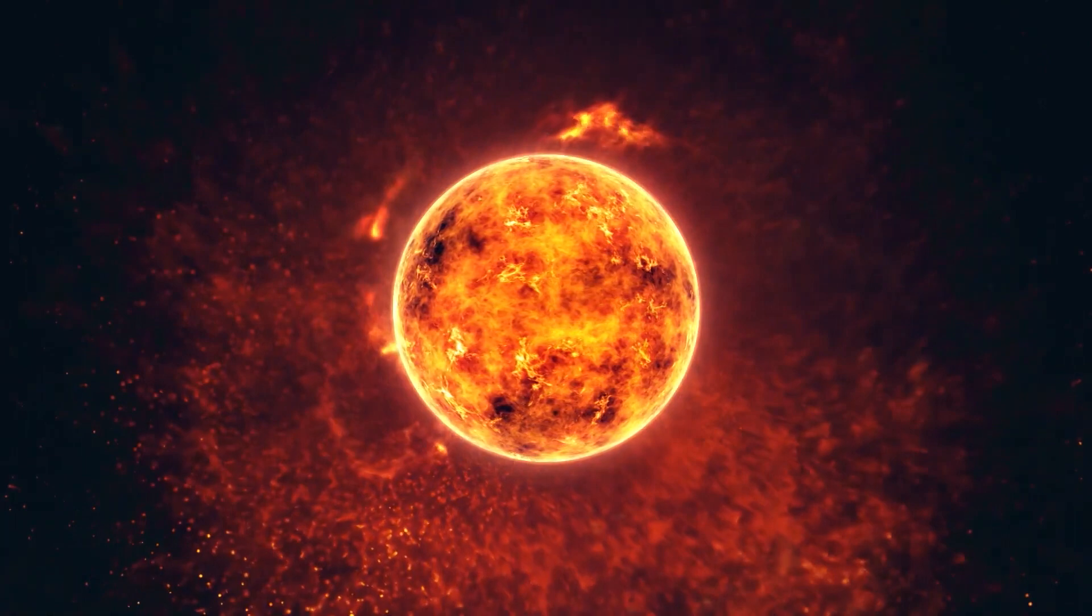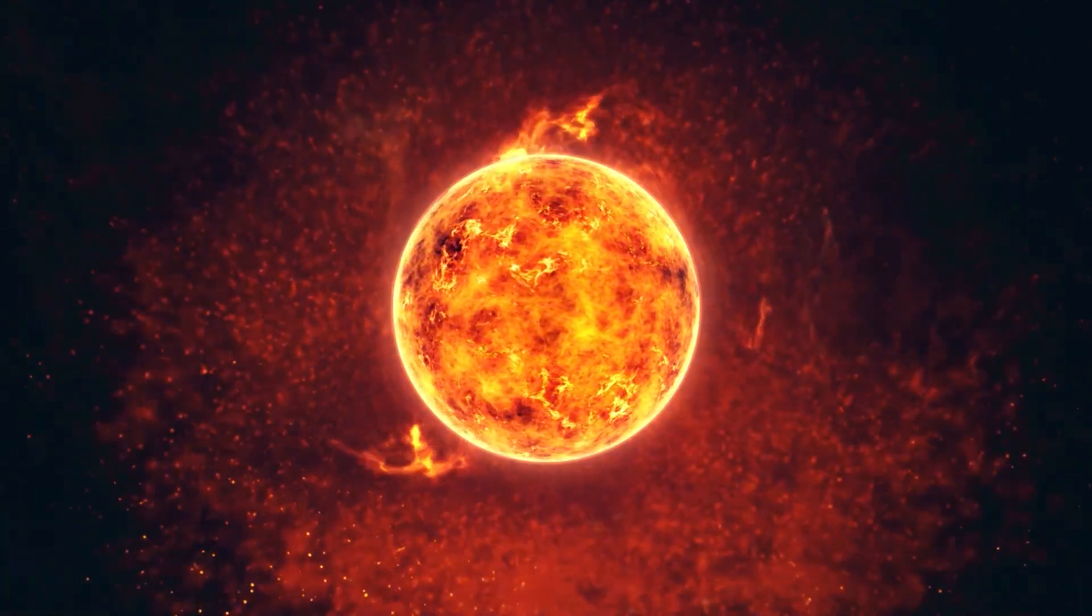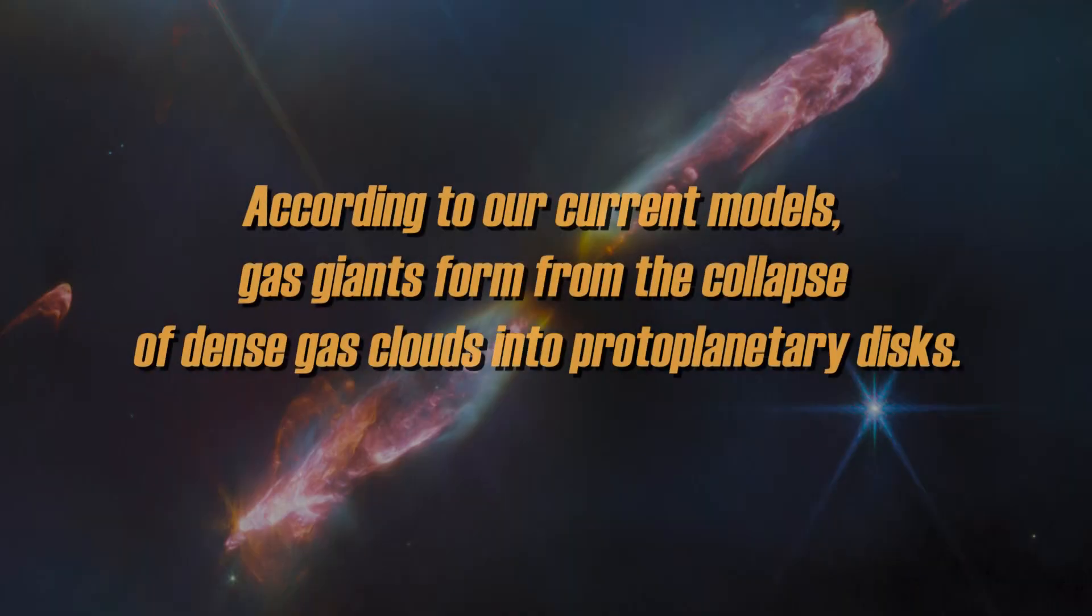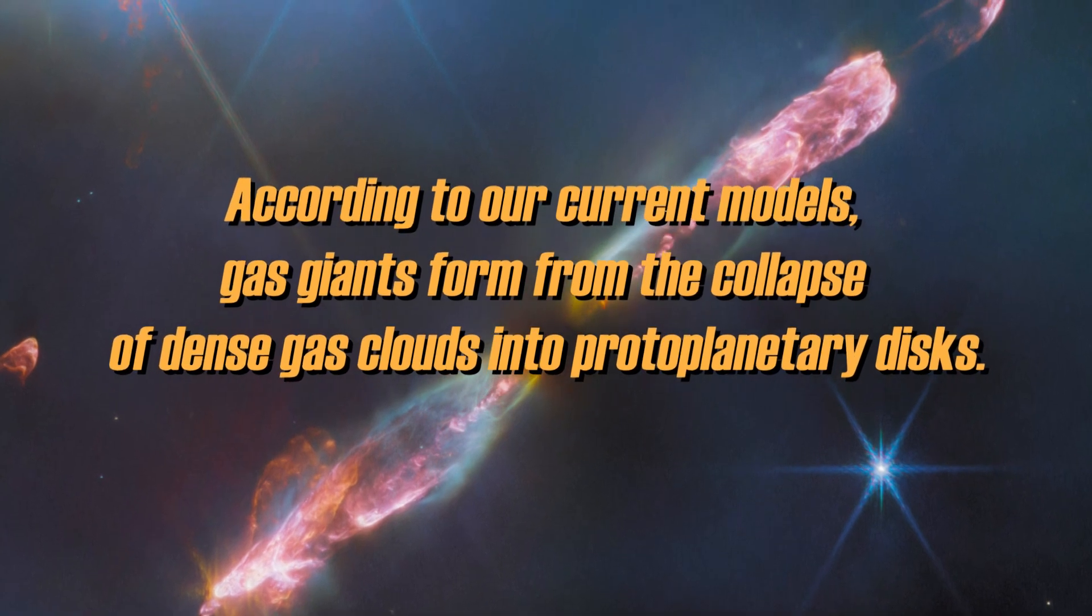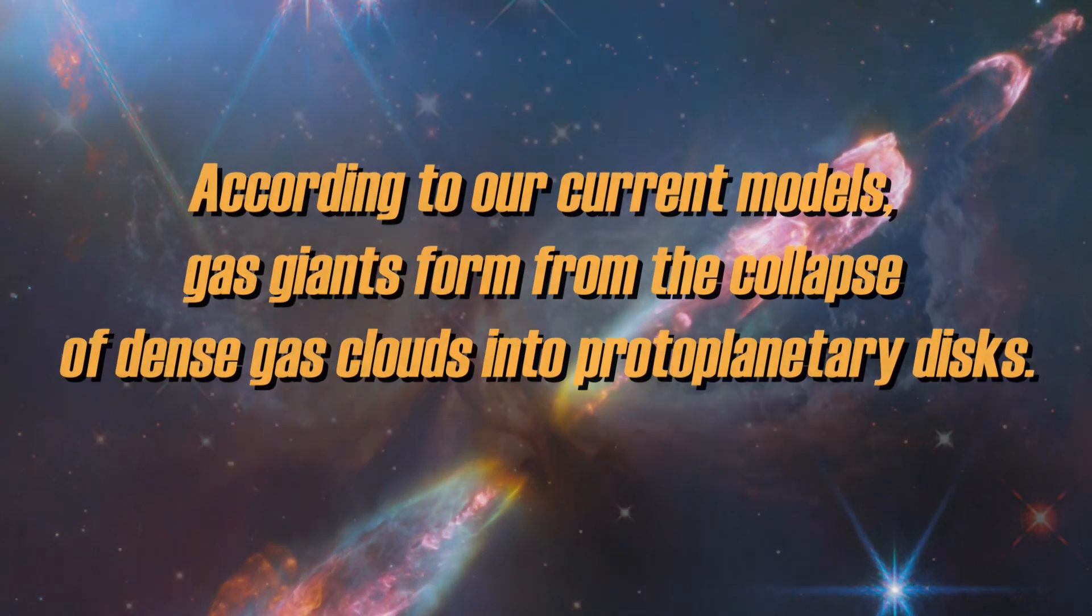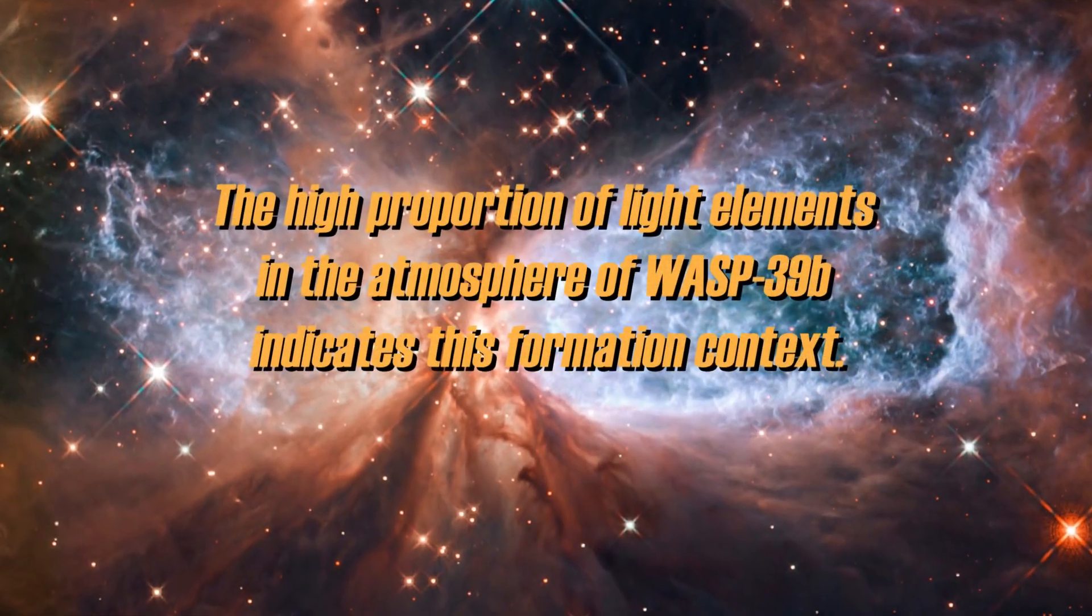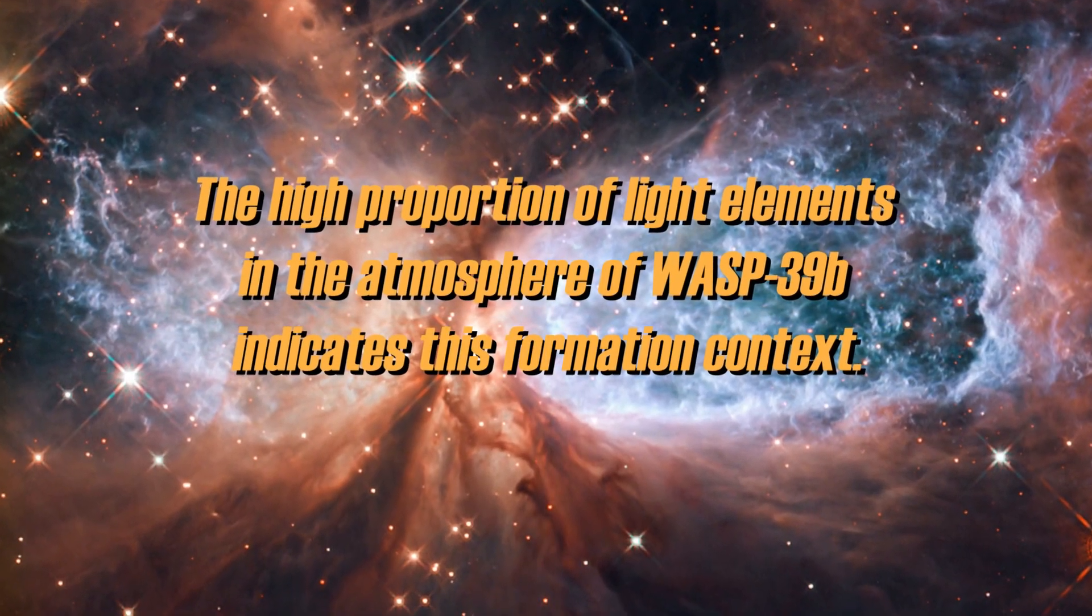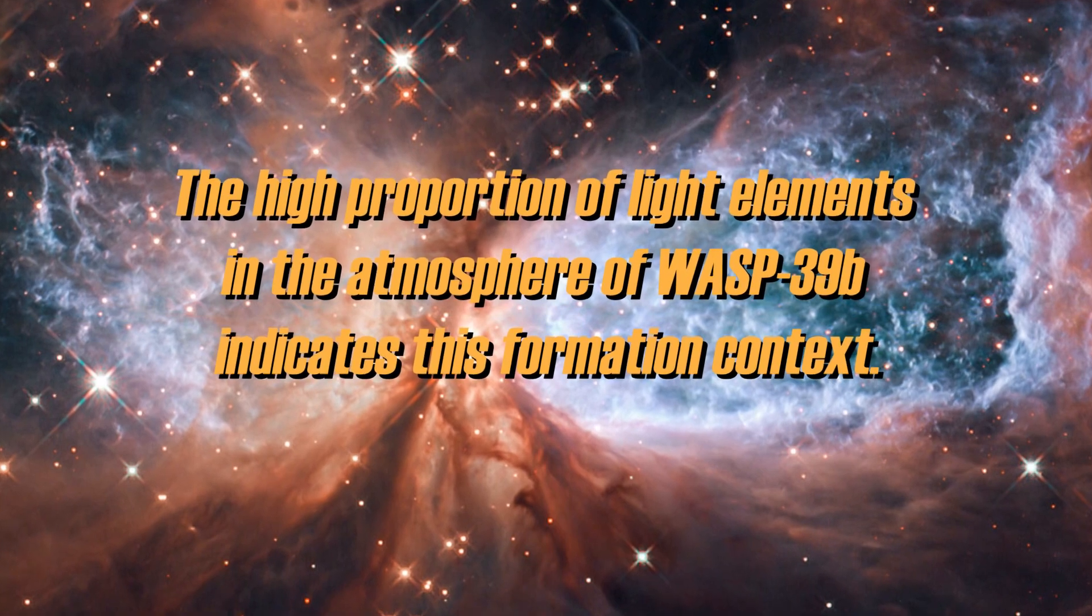In addition, its low volatile element content is also relevant. According to our current models, gas giants form from the collapse of dense gas clouds into protoplanetary disks. The high proportion of light elements in the atmosphere of WASP-39b indicates this formation context.